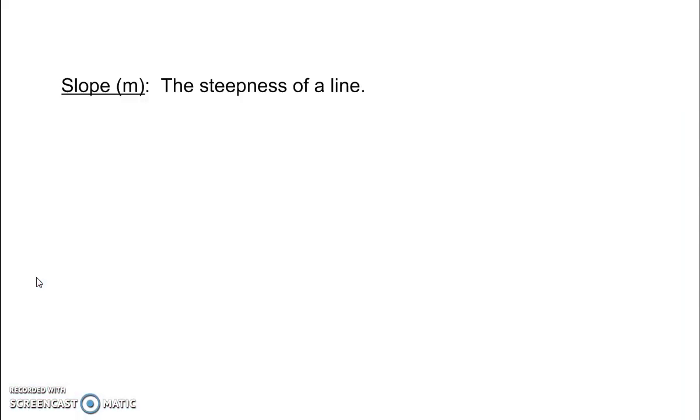So slope is also the steepness of a line, how steep it is. The bigger the slope, the steeper the line. That's rise over run. You can write it as the change in y over the change in x, delta y over delta x.